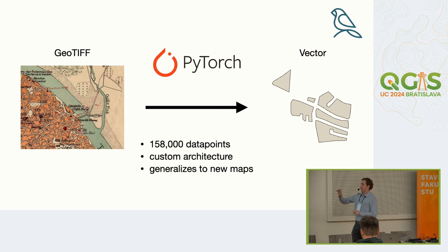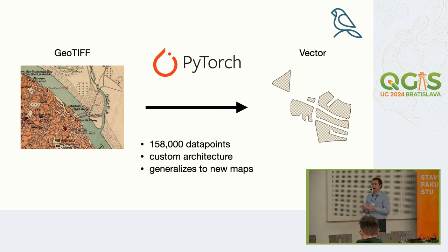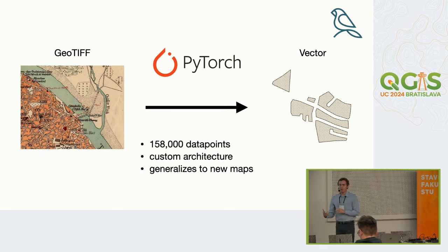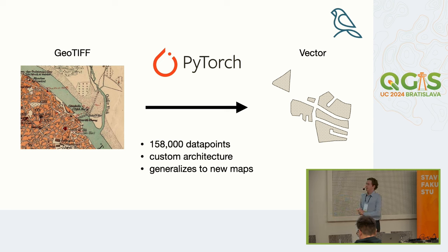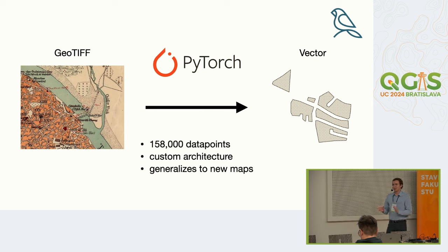We did this by training on more than 150,000 different geometries. We knew the neural network was actually doing something when we realized it started to generalize on new maps — that was really exciting. Early on, it would basically only work on maps it had seen before during training. Then one day we dragged in a satellite image, something we hadn't really trained on much, and we realized it was actually really great at picking out the roads — we were onto something.